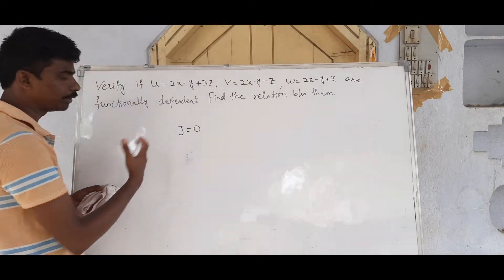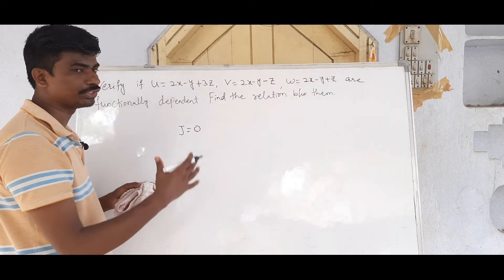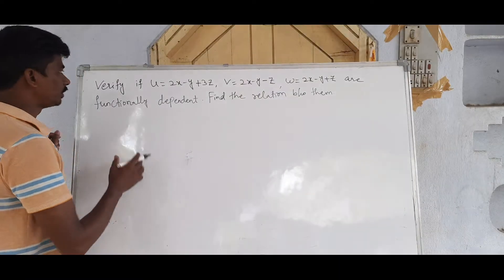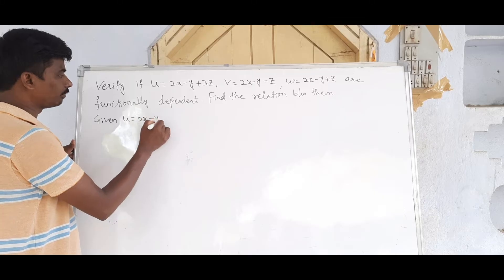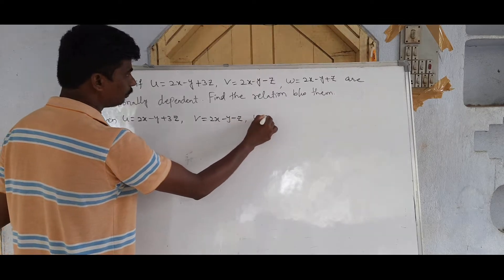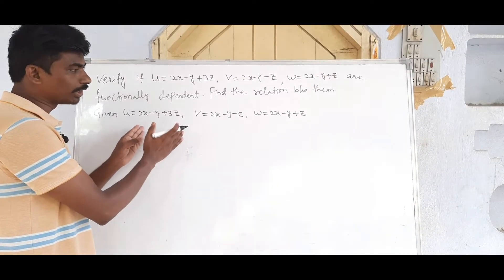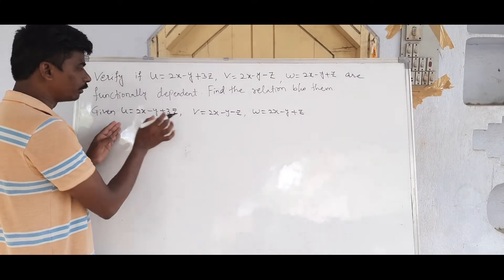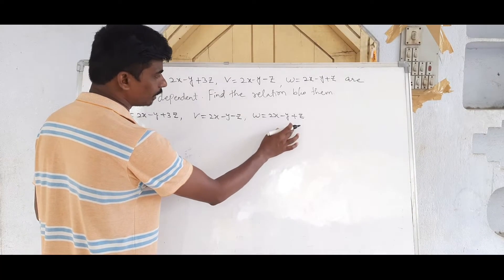First of all, we will compute the 3×3 Jacobian determinant. We need ∂u/∂x, ∂u/∂y, ∂u/∂z in the first row, ∂v/∂x, ∂v/∂y, ∂v/∂z in the second row, and ∂w/∂x, ∂w/∂y, ∂w/∂z in the third row.